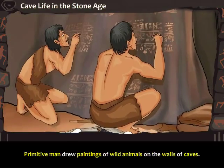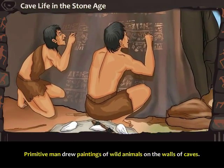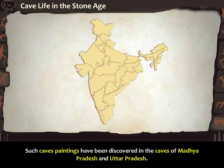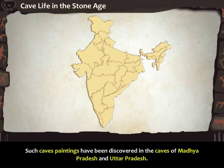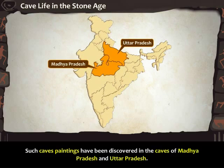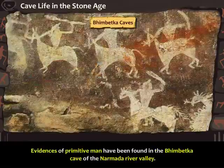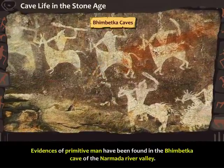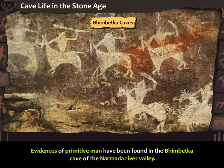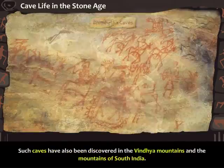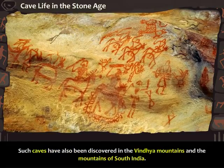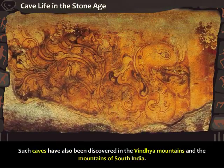Primitive man drew paintings of wild animals on the walls of caves. Such cave paintings have been discovered in the caves of Madhya Pradesh and Uttar Pradesh. Evidences of primitive man have been found in the Bhim Betka cave of the Narmada River Valley. Such caves have also been discovered in the Vindya Mountains and the mountains of South India.